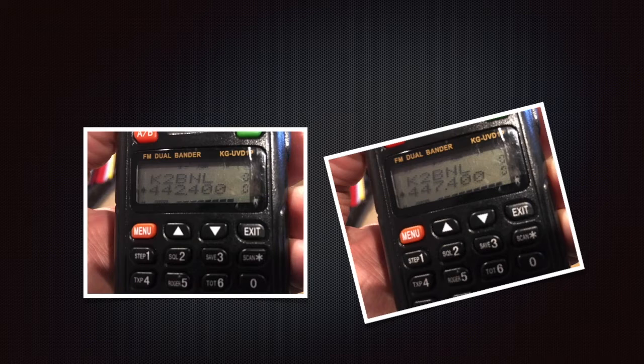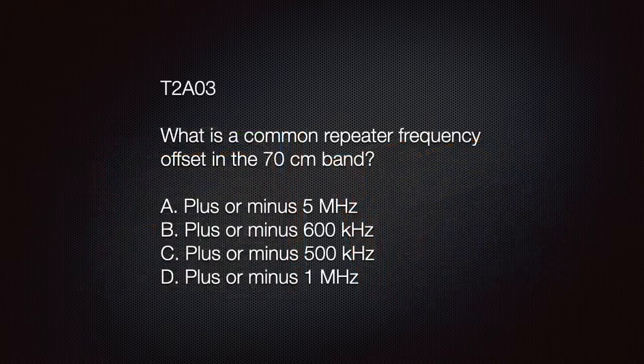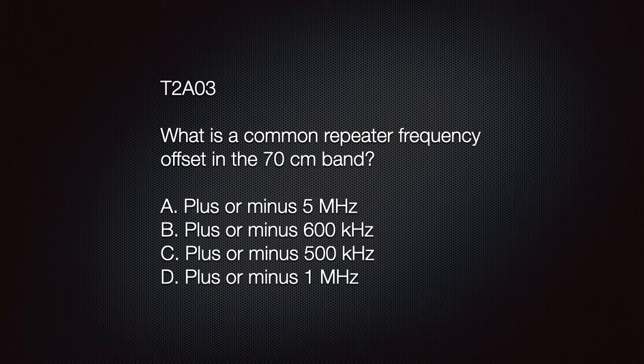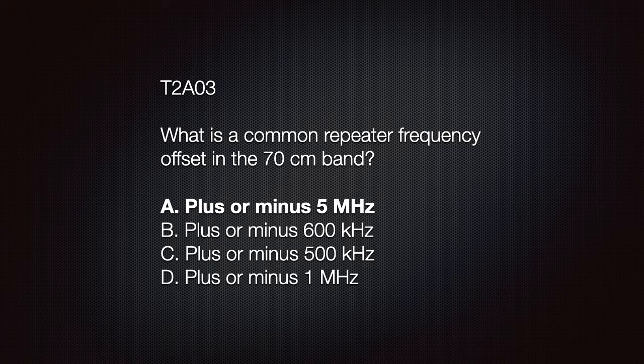The photo on the left shows the handheld transceiver display showing the repeater's output frequency, and the other on the right shows the transceiver keyed to our transmit with the offset frequency displayed. The exam question is: What is the common repeater frequency offset in the 70 centimeter band? The answer is A, plus or minus 5 megahertz.